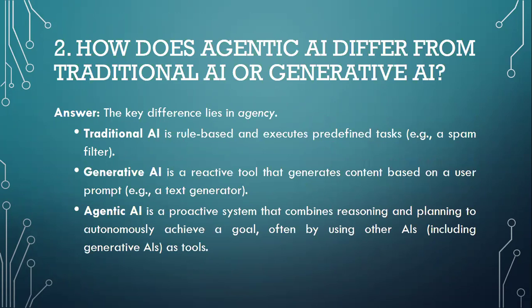How does Agentic AI differ from traditional AI or generative AI? The key difference lies in agency. Traditional AI is rule-based and executes predefined tasks — example, a spam filter. Generative AI is a reactive tool that generates content based on user prompt — example, text generation or sentiment analysis. Agentic AI is a proactive system that combines reasoning and planning to autonomously achieve a goal, often by using other APIs, including generative AI and other tools.